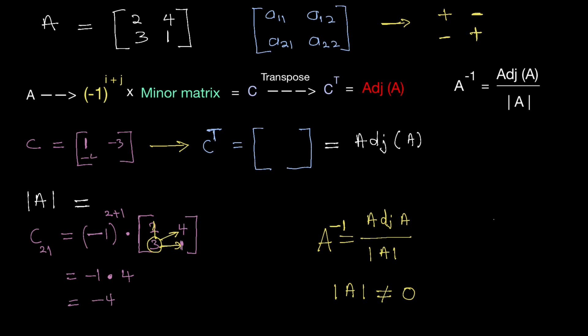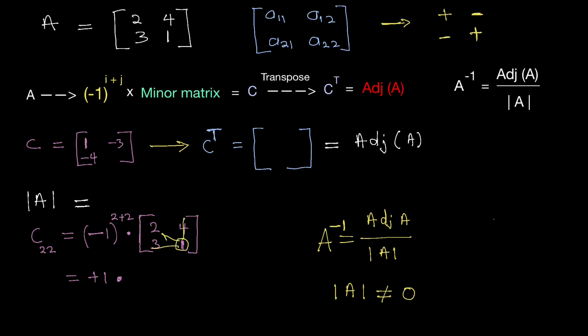For the final cofactor element C22 at position 2 plus 2, the sign is minus 1 to the power of 4, which is even, giving plus 1. Selecting the matrix element, drawing vertical and horizontal lines gives a minor of 2. So C22 equals plus 1 times 2, which is 2. The cofactor matrix is now complete with elements 1, minus 3, minus 4, and 2.